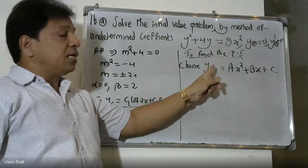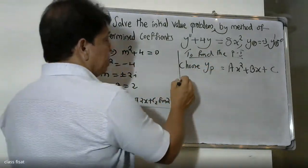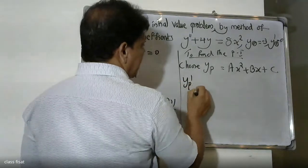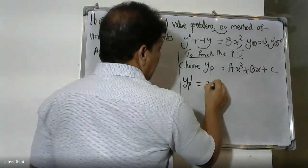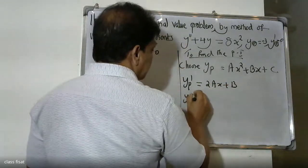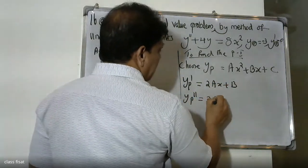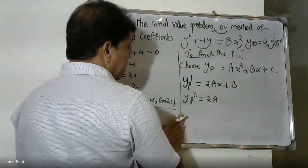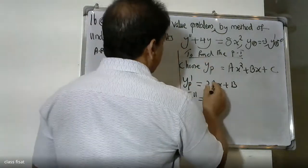For the particular solution, we assume yp = Ax² + Bx + C. Then yp' = 2Ax + B, and yp'' = 2A.